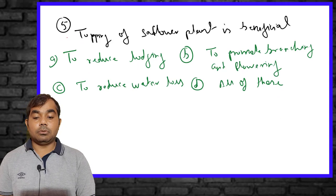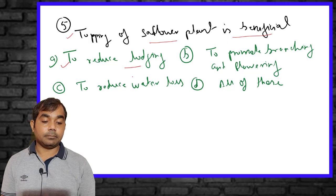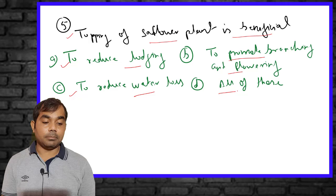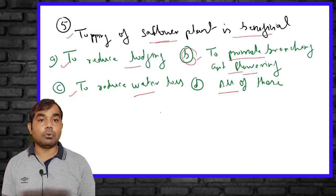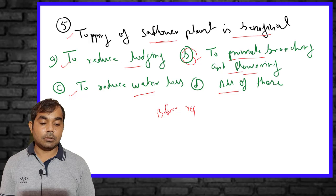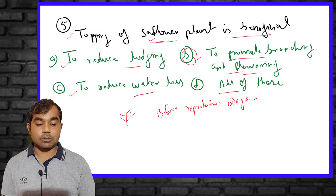The fifth MCQ asks: topping of safflower plants is beneficial for what reason? Options include reducing lodging, promoting branching and flowering, reducing water loss, or all of these. The most appropriate answer is to promote branching and flowering. If you top safflower before it reaches the reproductive stage, branches increase, and when branching increases, the number of flower heads also increases.